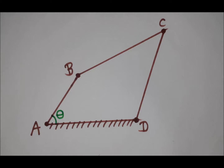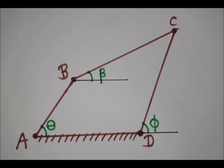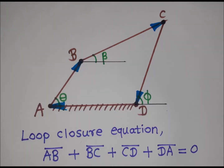The angle made by input link AB with the horizontal is theta, the angle made by output link CD with the horizontal is phi, and the angle made by coupler link BC with the horizontal is beta. Position vectors are drawn along the links, so we can write the loop closure equation as: AB + BC + CD + DA = 0.